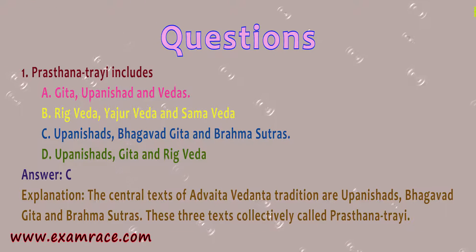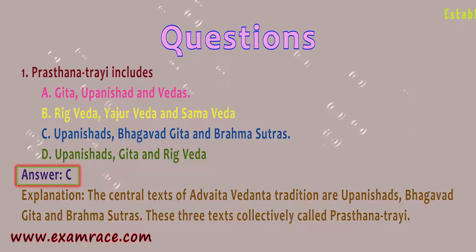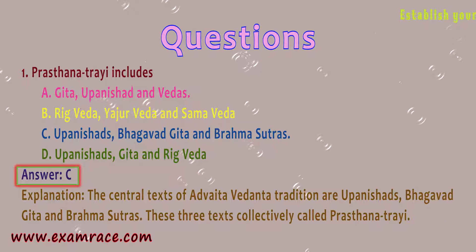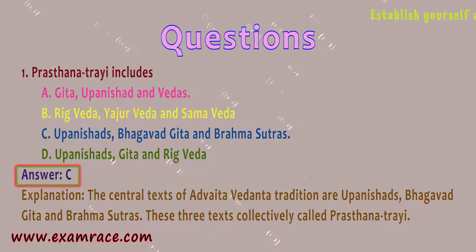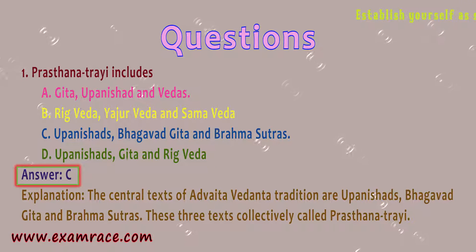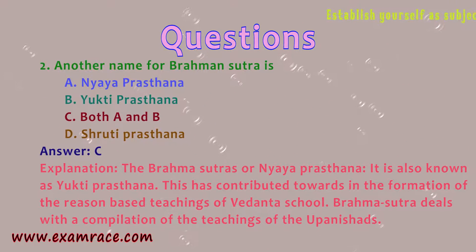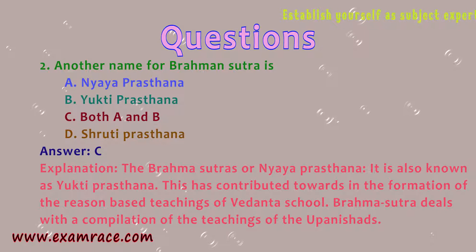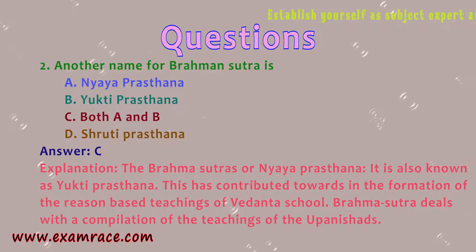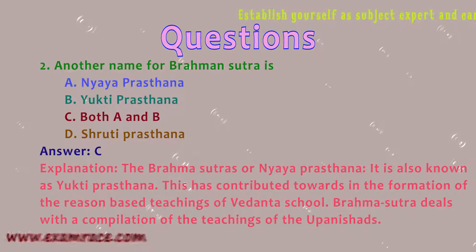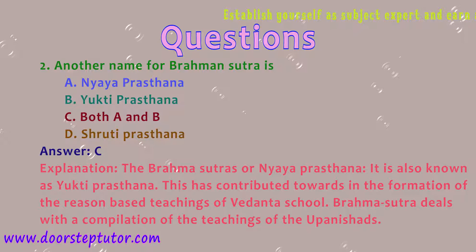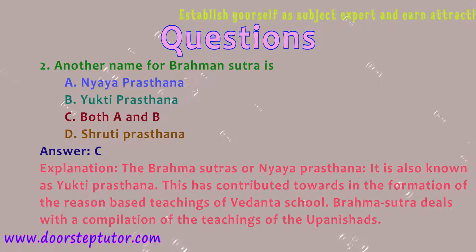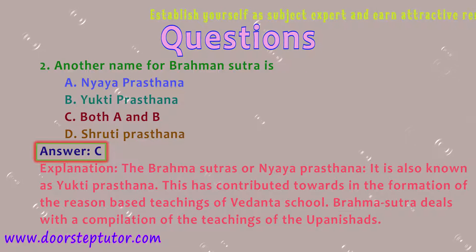Review Question 1: The correct answer is Upanishads, Bhagavad Gita, and Brahma Sutra. These three together are called Prasthana Trayae. Question 2: Another name for Brahma Sutra — the correct answer is C: both Nyaya Prasthana and Yukti Prasthana.